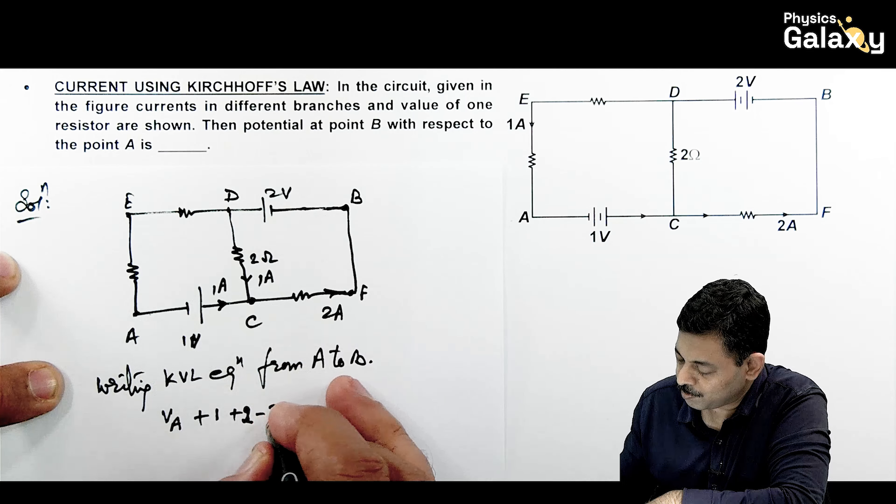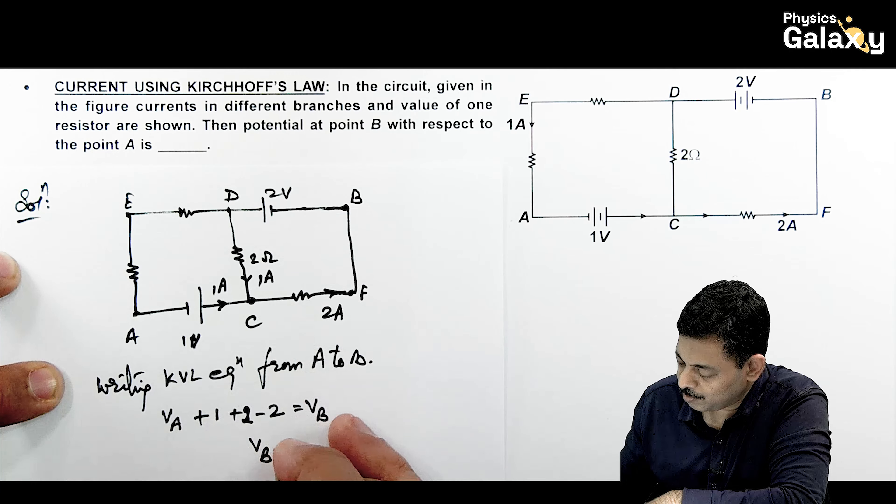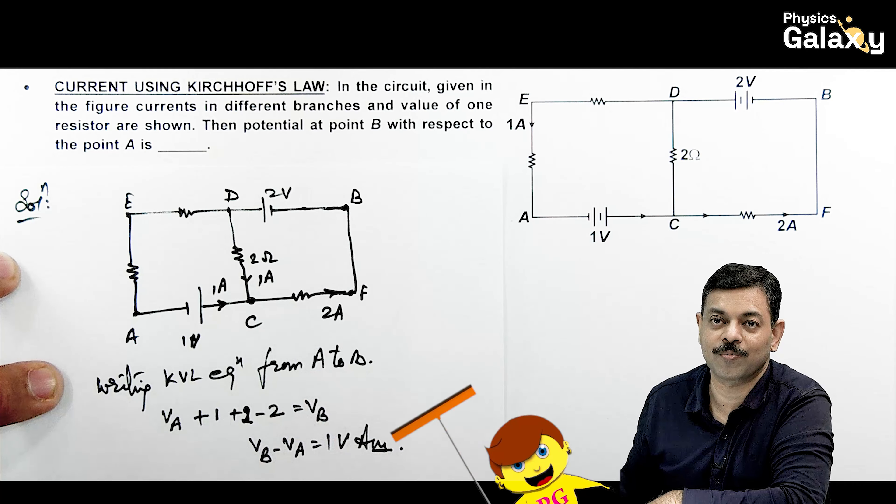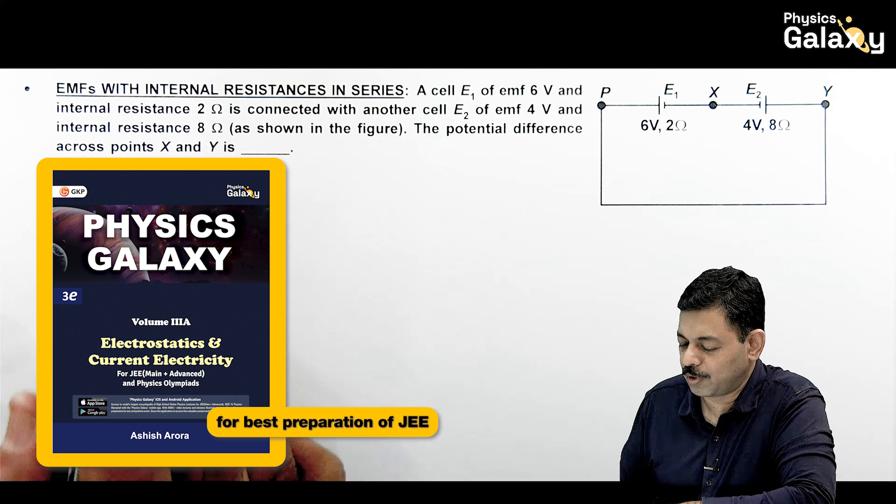And this is 2 ohms, so this is 2 volts, and this is minus 2 volts. And finally, it is coming out to be B. So you can see the value of VB minus VA is coming out to be 1 volt. That is the answer to this problem.